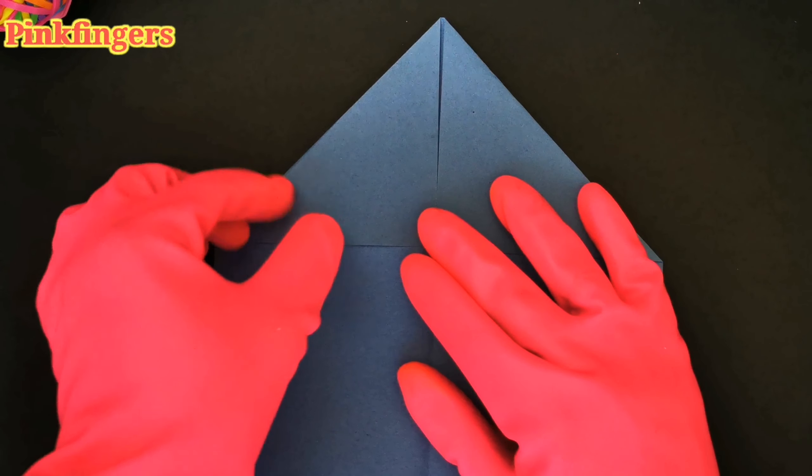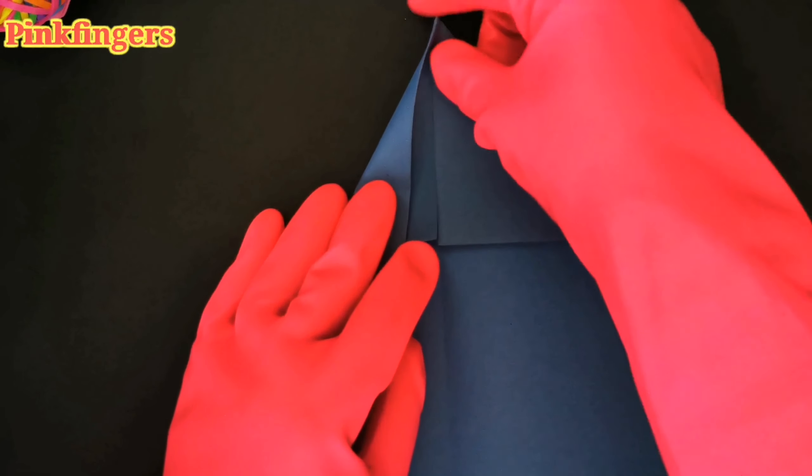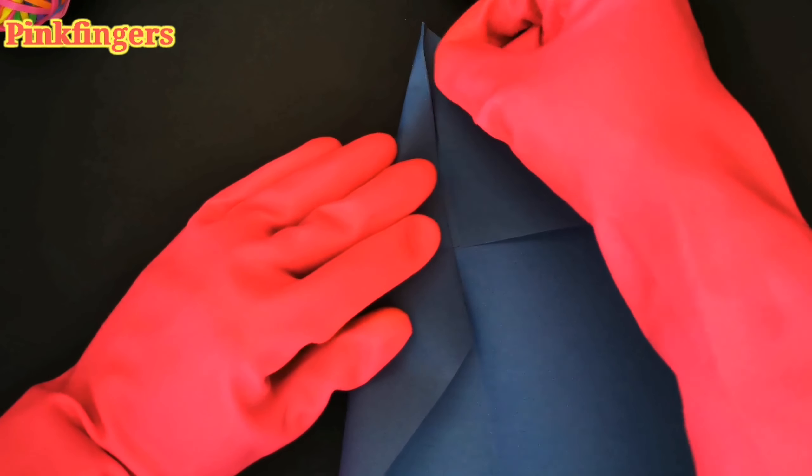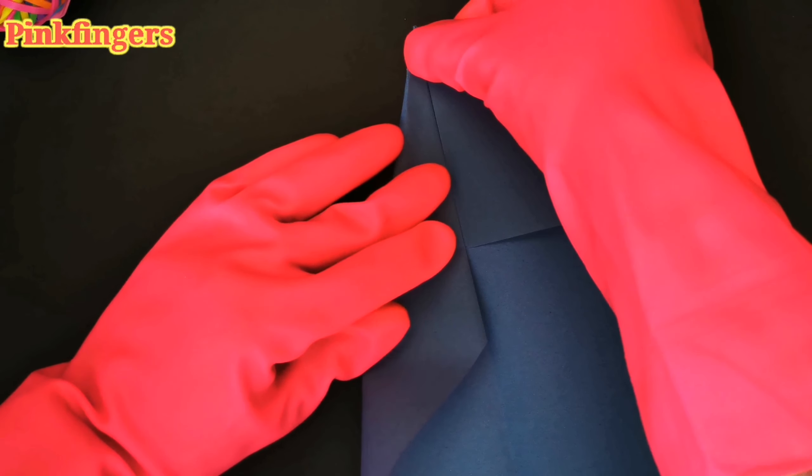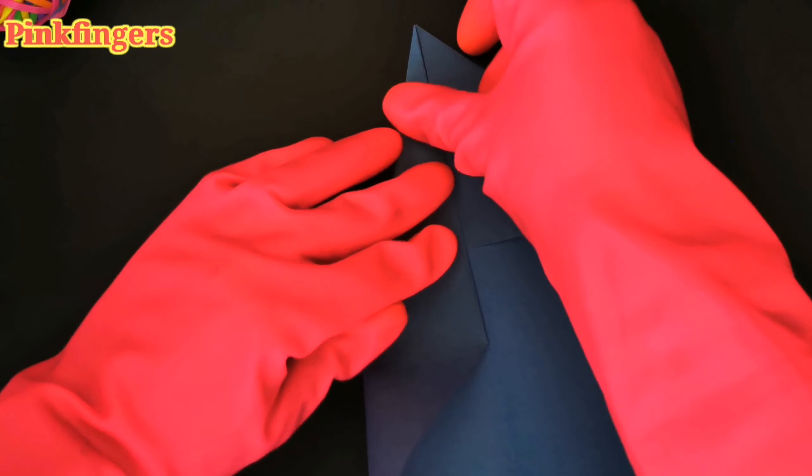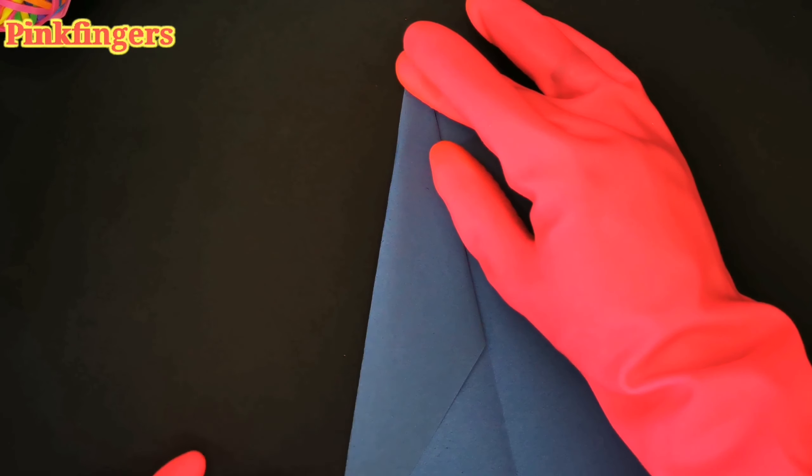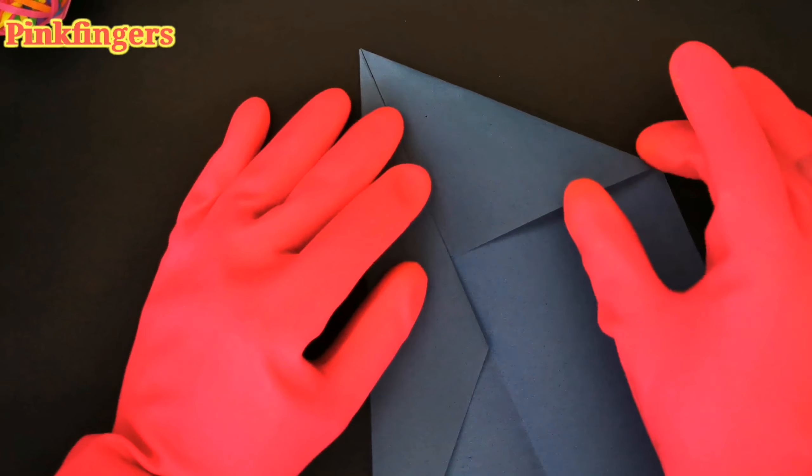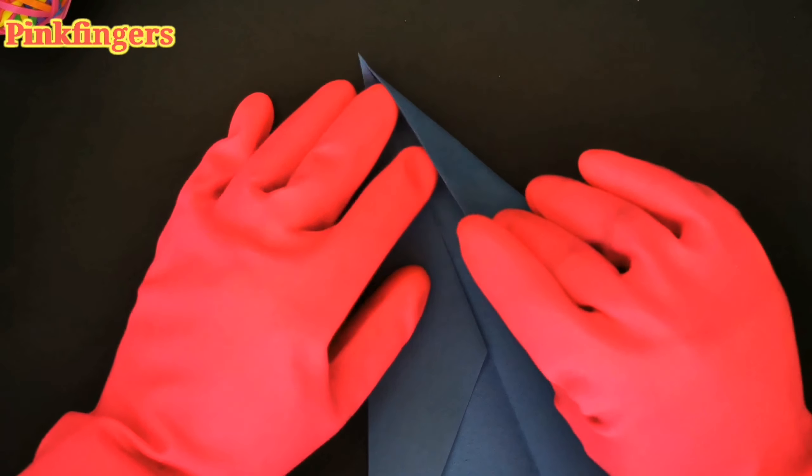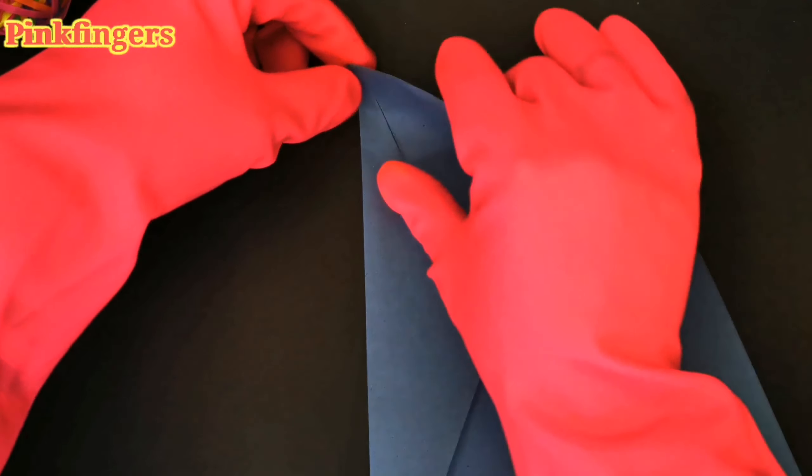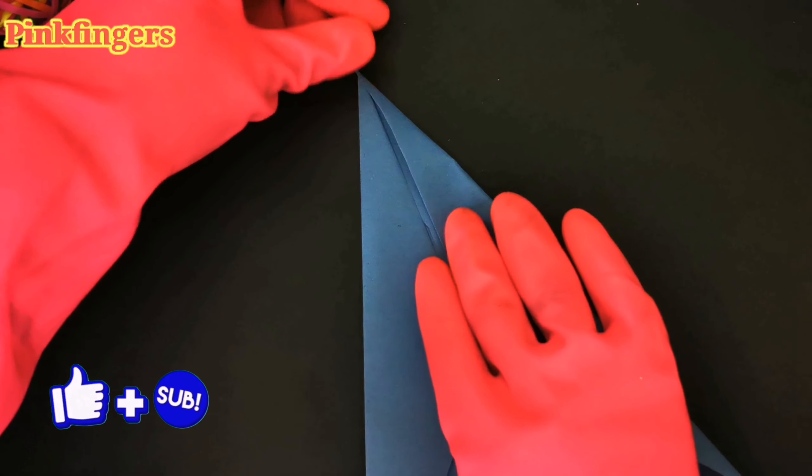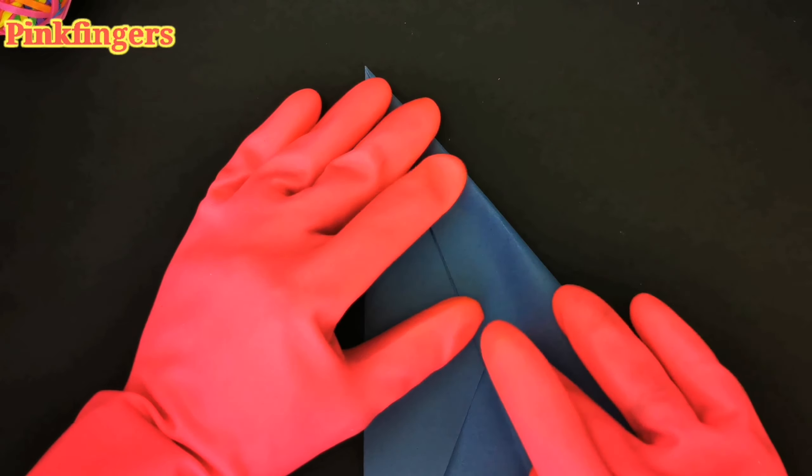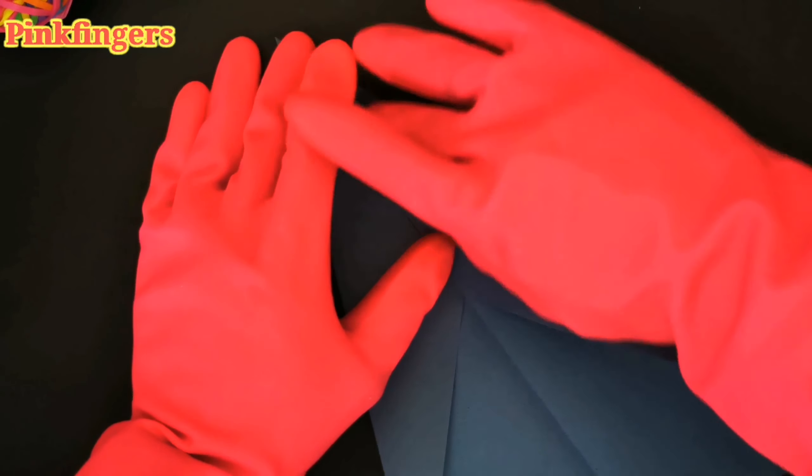Then we fold it onto itself. Make sure you line it up so it's dead in the middle. Make sure you're happy, just press down and create that sharp crease. We do the same for the other side. By the way, if I'm going too quickly, you can always pause it, take it back, and rewind.